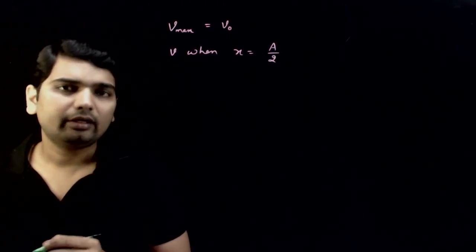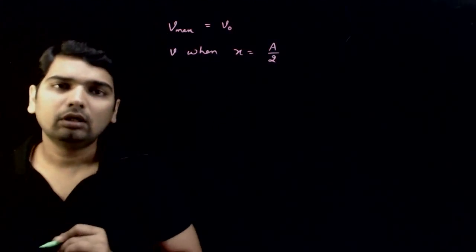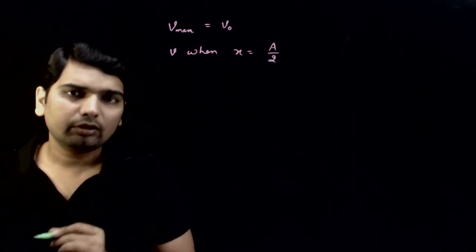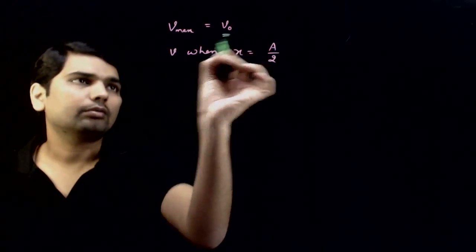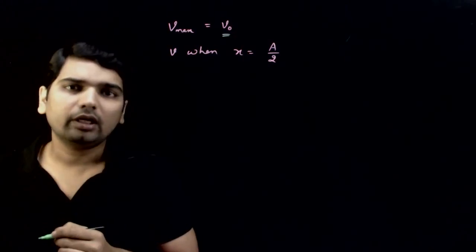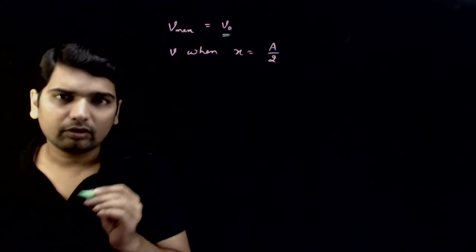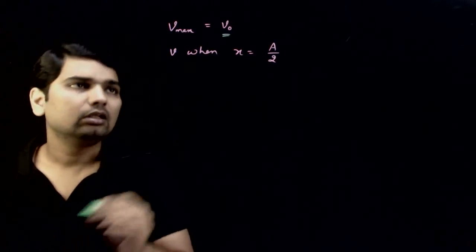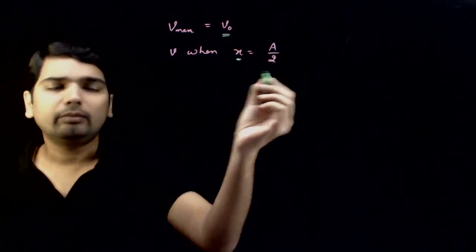In this problem, we are given that the maximum speed of a particle undergoing SHM is V0. And we are asked, what will be its velocity, what will be its speed when x is equal to a by 2?